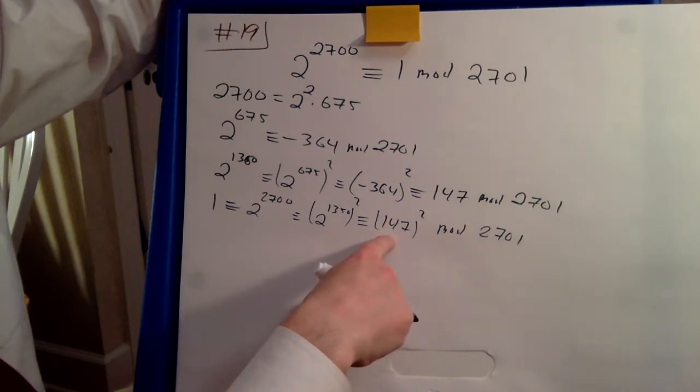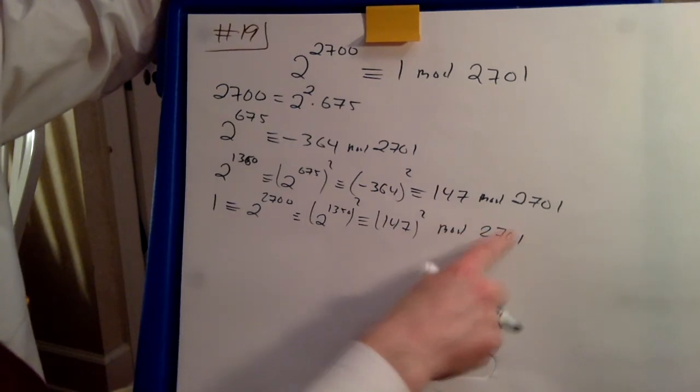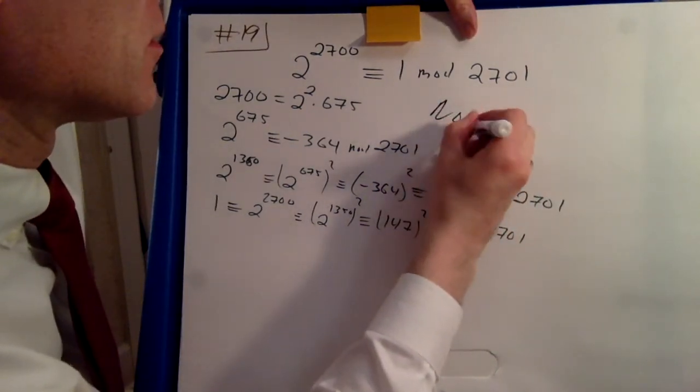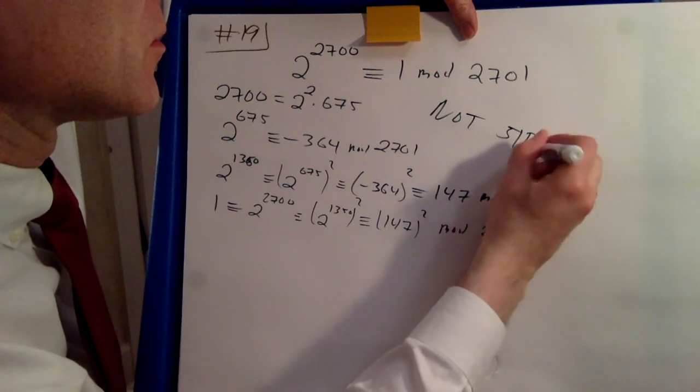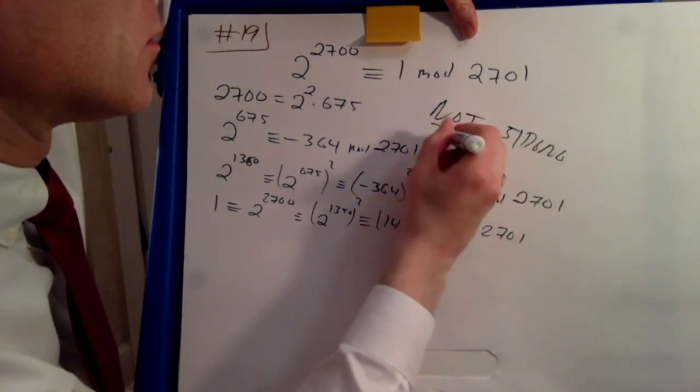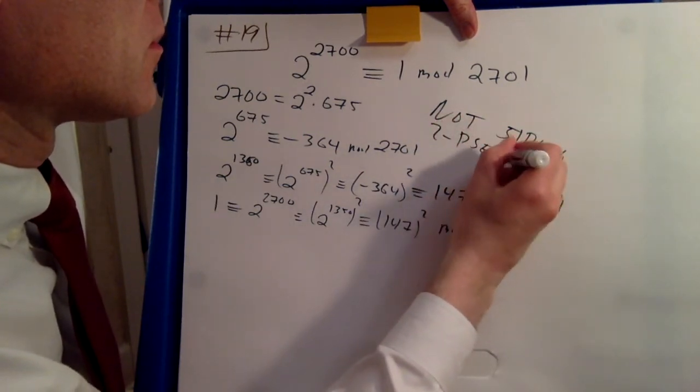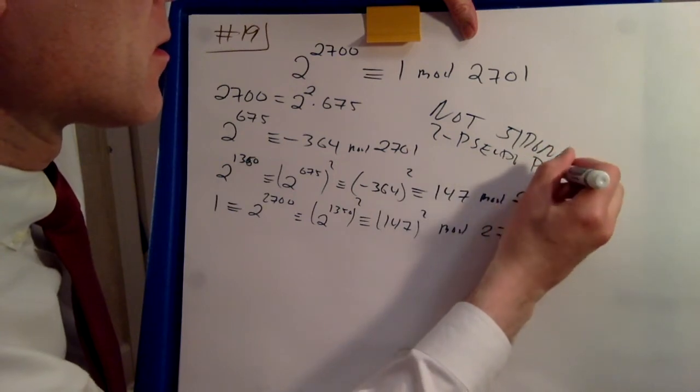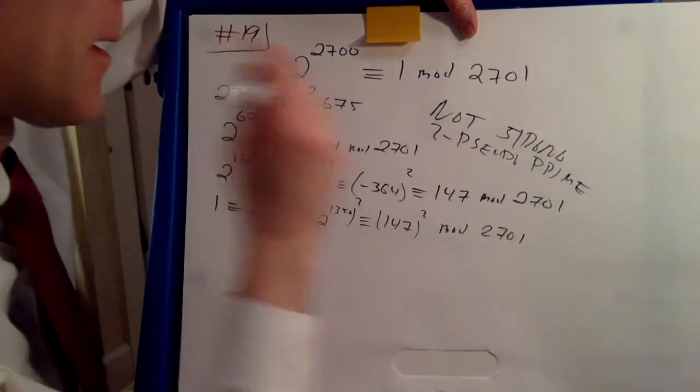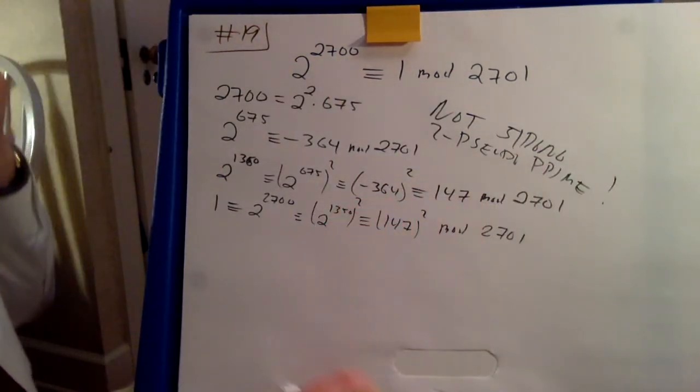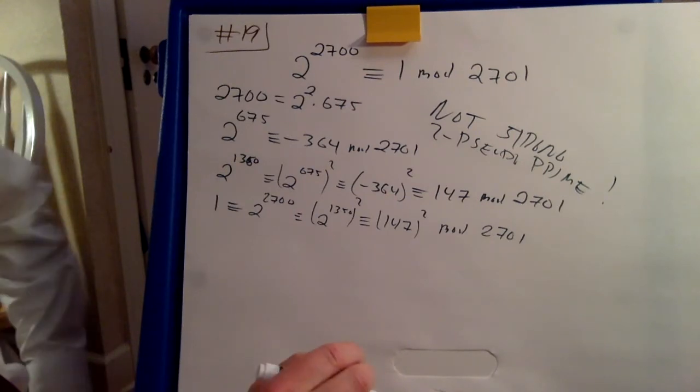Hence, you know at this point that 2071 is not a strong pseudoprime. But still, we can use this information to factor it.